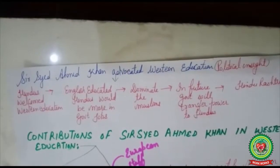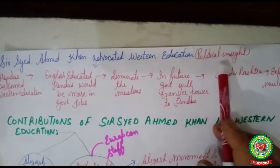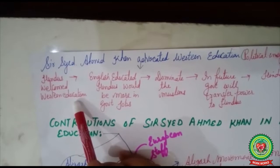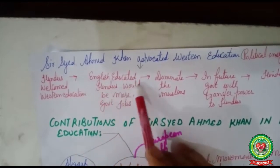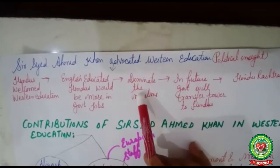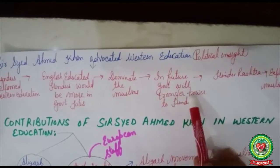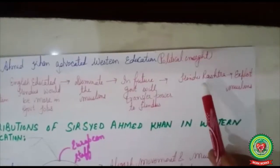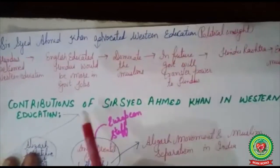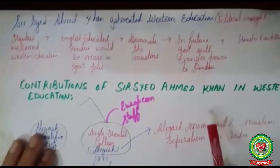Sir Syed Ahmed Khan's advocacy for Western education also had a political insight behind it. He believed that since Hindus had welcomed Western education, English-educated Hindus would dominate government jobs, and with the passage of time, if the British were to leave India, power would be transferred to Hindu society, resulting in a Hindu Rashtra in which Hindus would exploit Muslims. So he urged Muslims to acquire Western education to prevent this from happening.